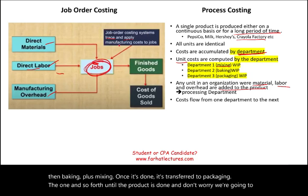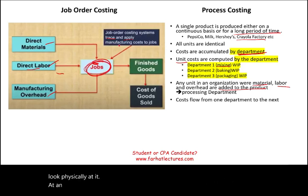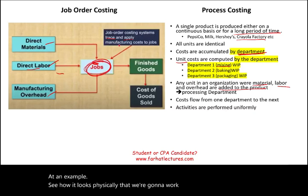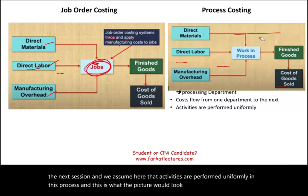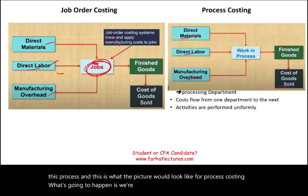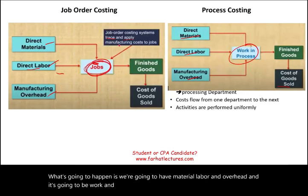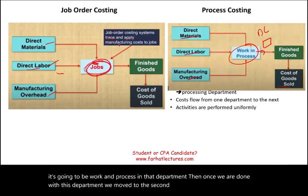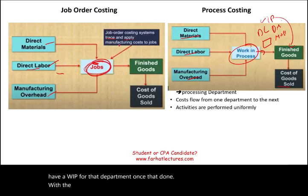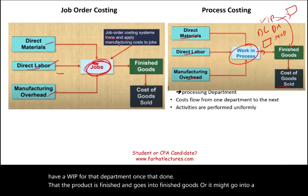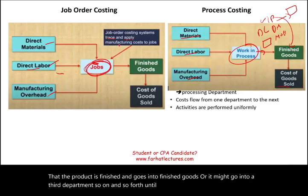We will look at a physical example shortly, then work through journal entries in the next session. We assume that activities are performed uniformly throughout the process. In process costing, material, labor, and overhead enter work in process for each department. Once a department is done, the product moves to the next department, and if the process is fully complete, it goes into finished goods, then eventually becomes cost of goods sold.